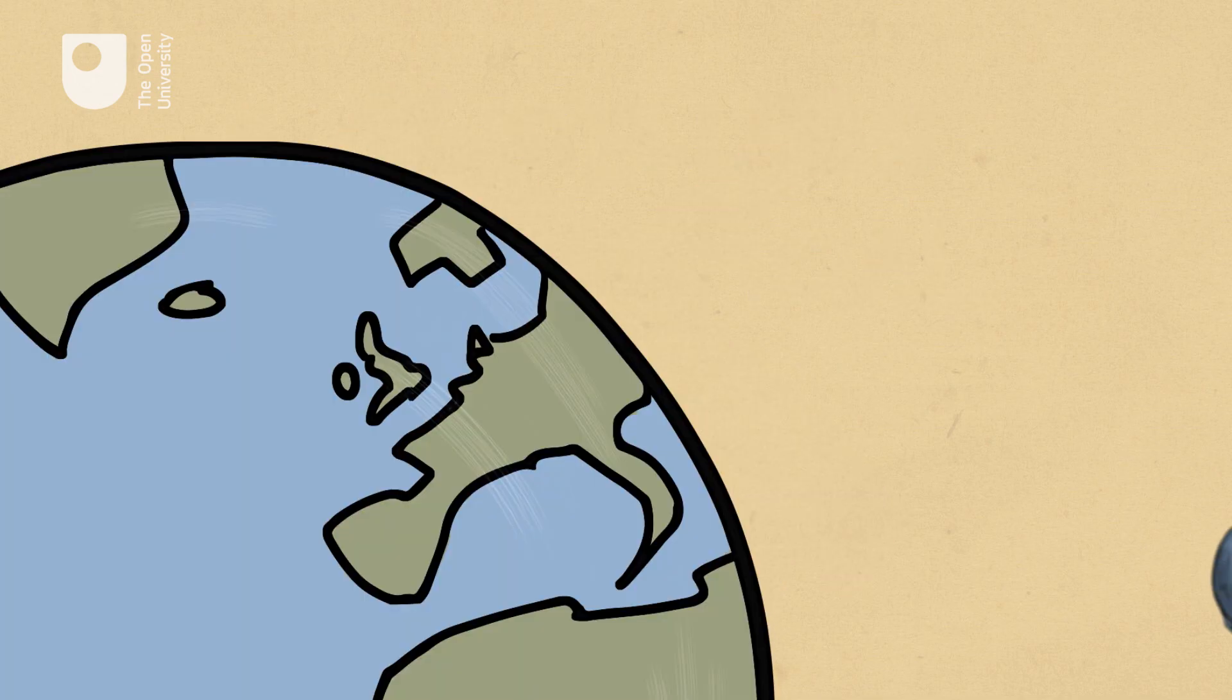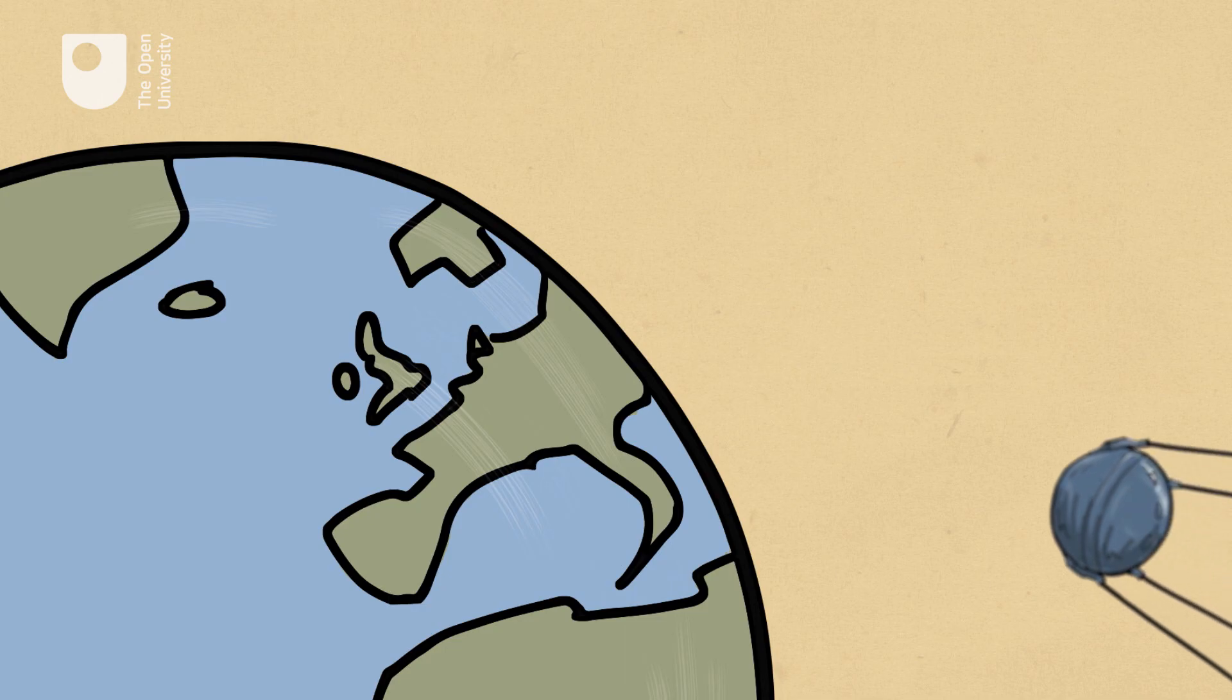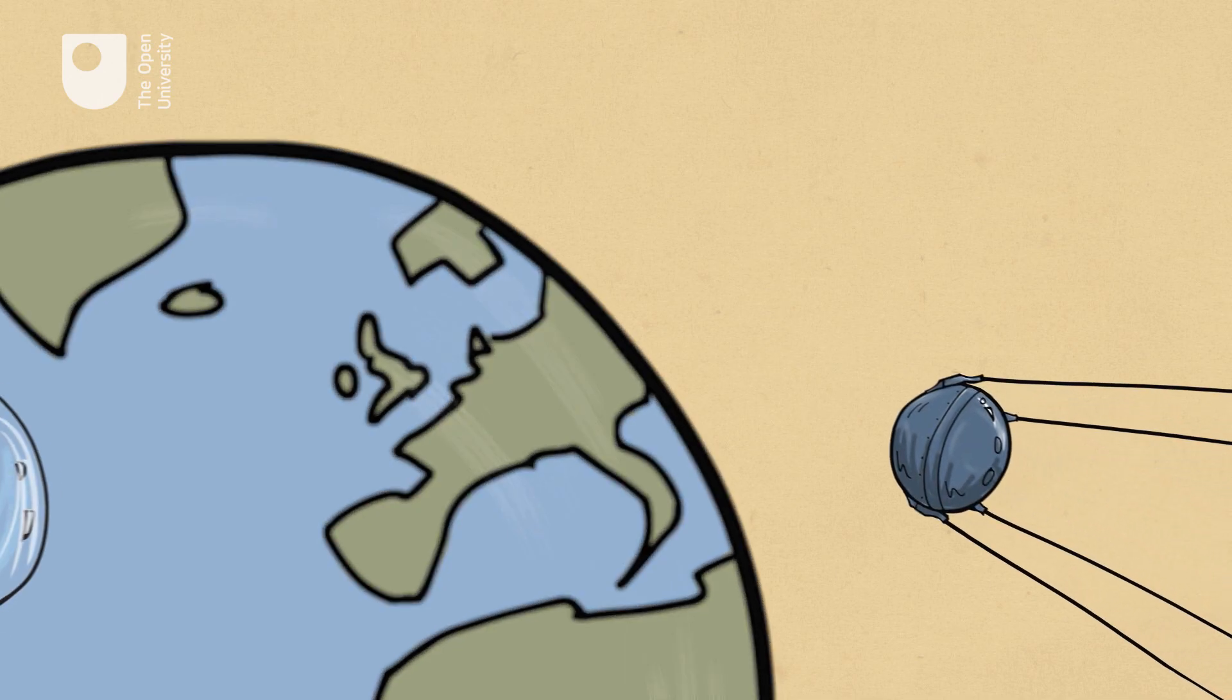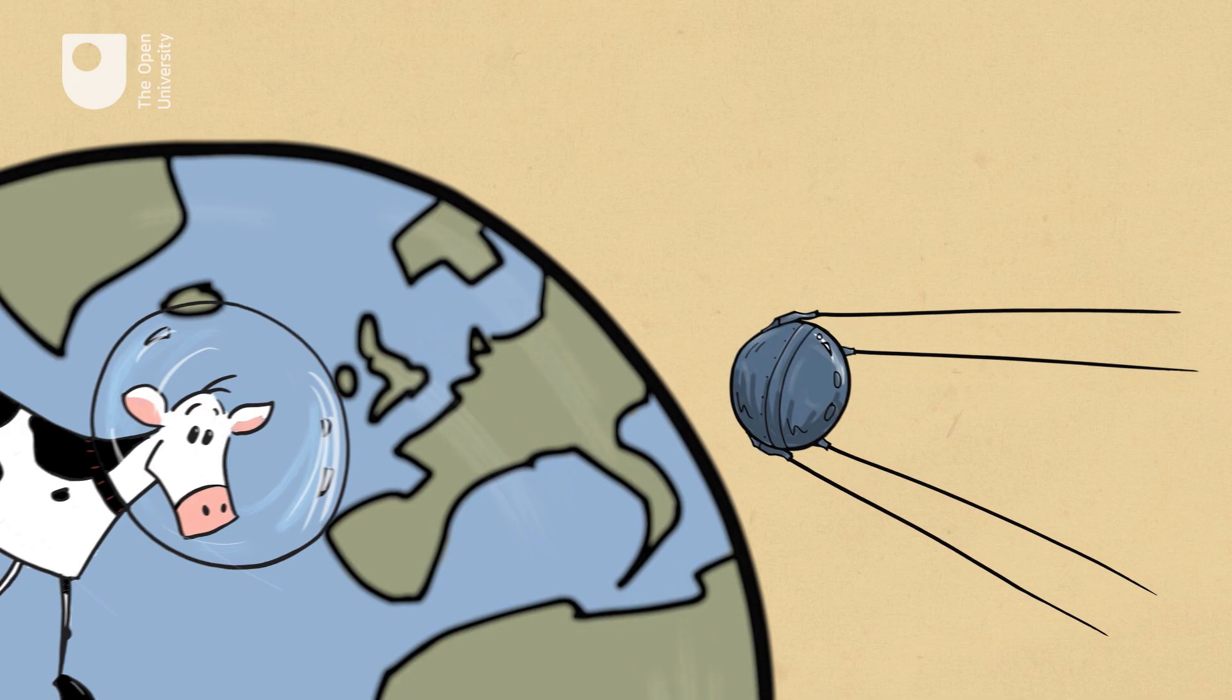We began launching artificial satellites into orbit around the Earth in 1957, but satellite describes anything that orbits something else.